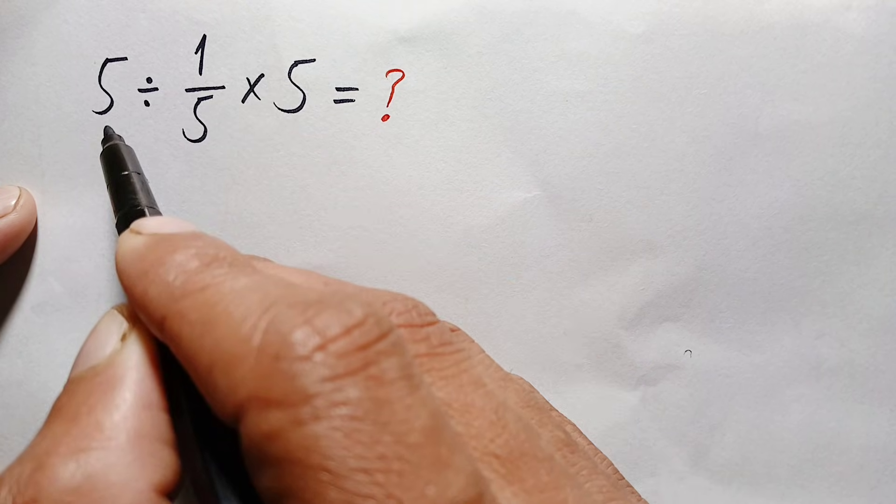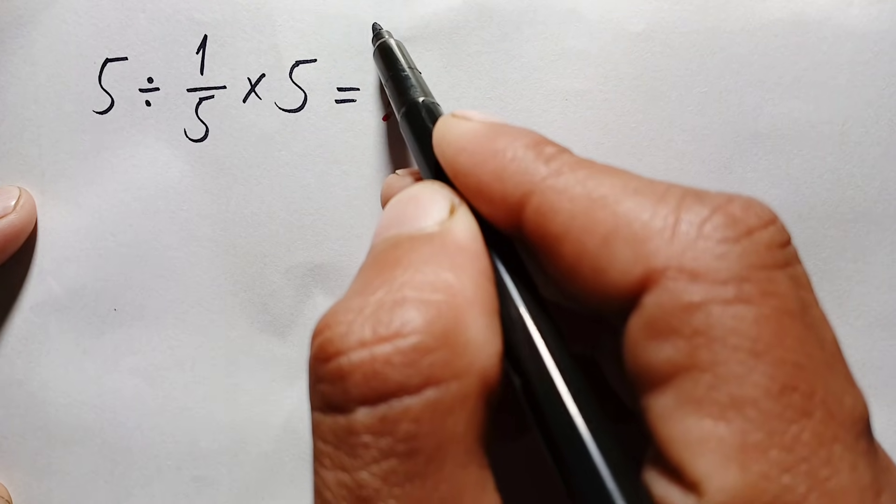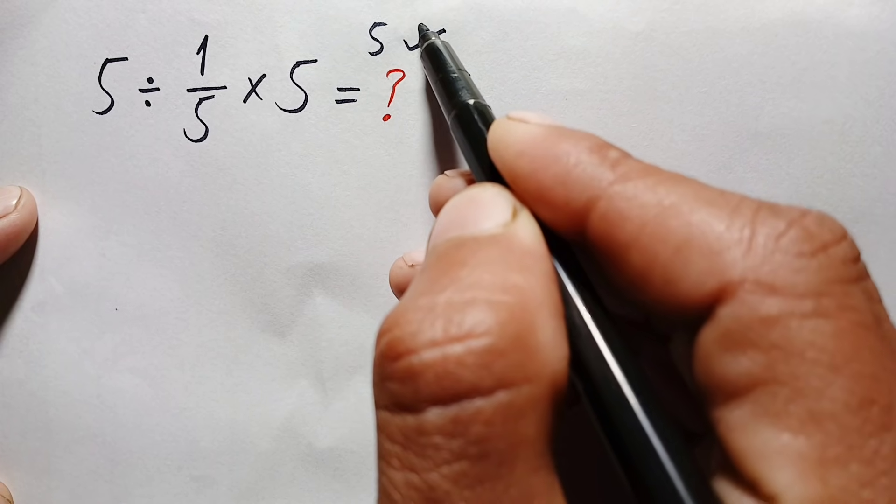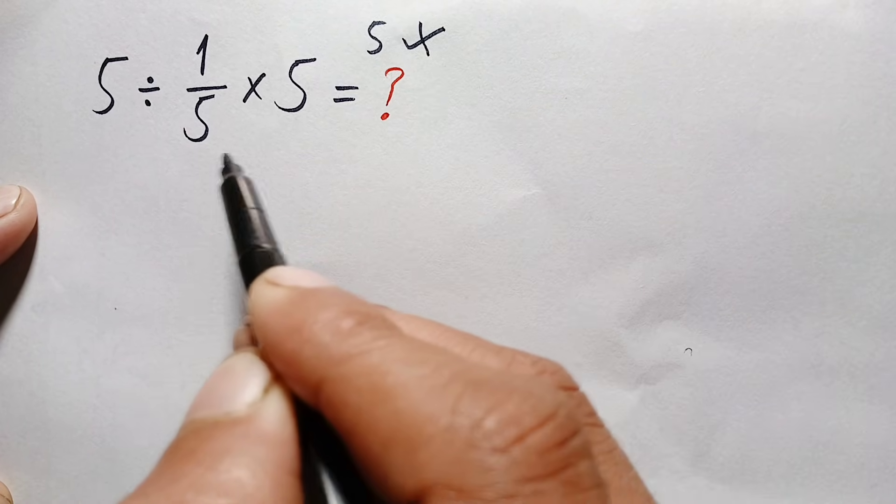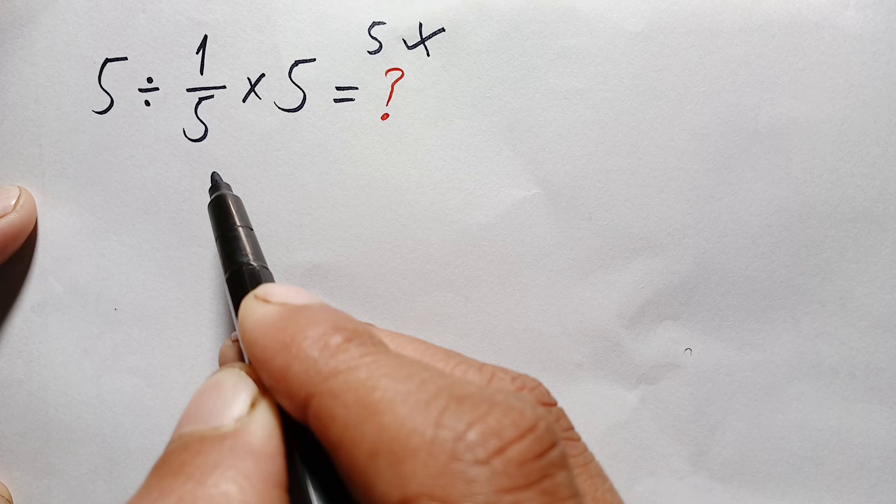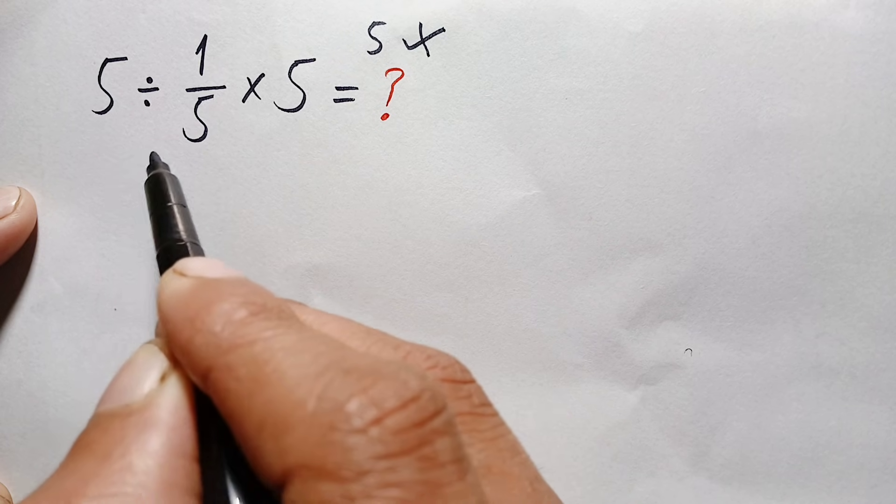And dividing 5 by 1 gives 5, and this is our answer. But this answer is wrong. This is due to wrong operation. Looking at the question carefully, we have two operations: division and multiplication.